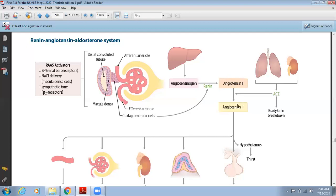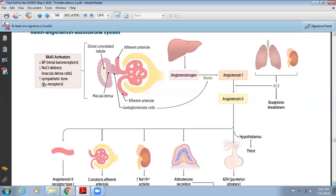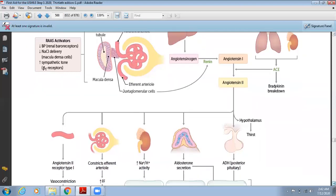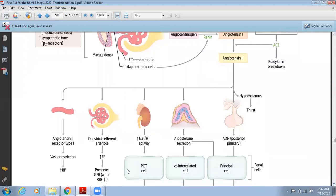Angiotensin I is converted into angiotensin II with the help of angiotensin-converting enzyme. ACE is present in the endothelium of the lungs and kidney. The most important function of angiotensin II is vasoconstriction. It causes arteriolar constriction all over the body, which ultimately causes increased blood pressure.